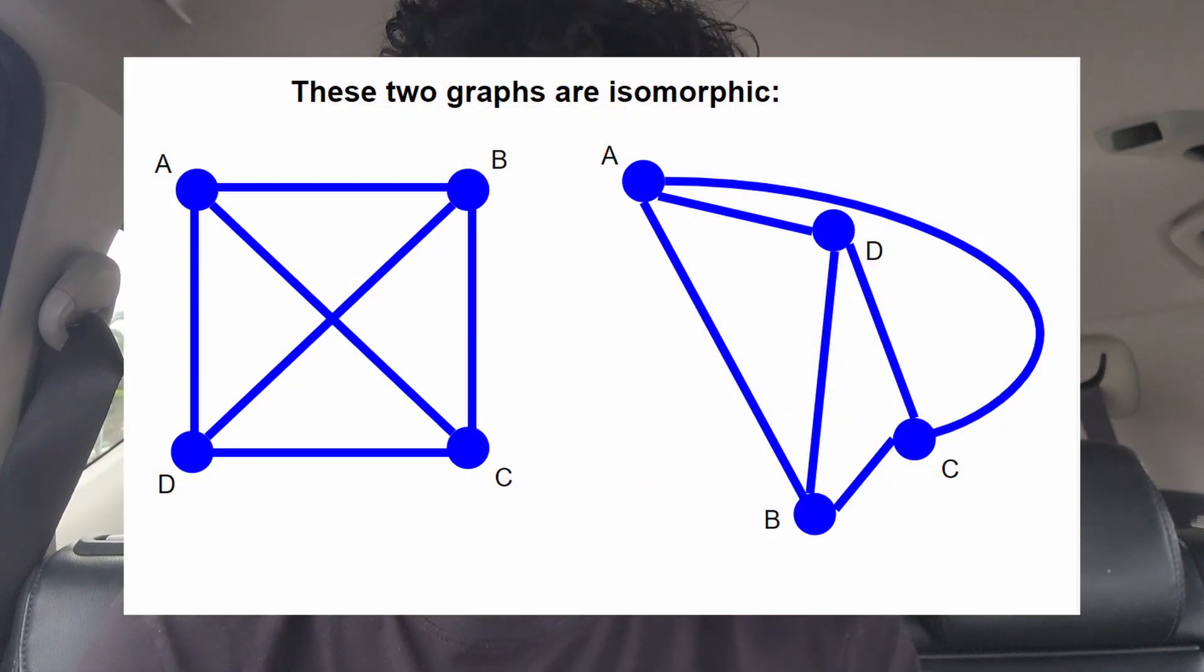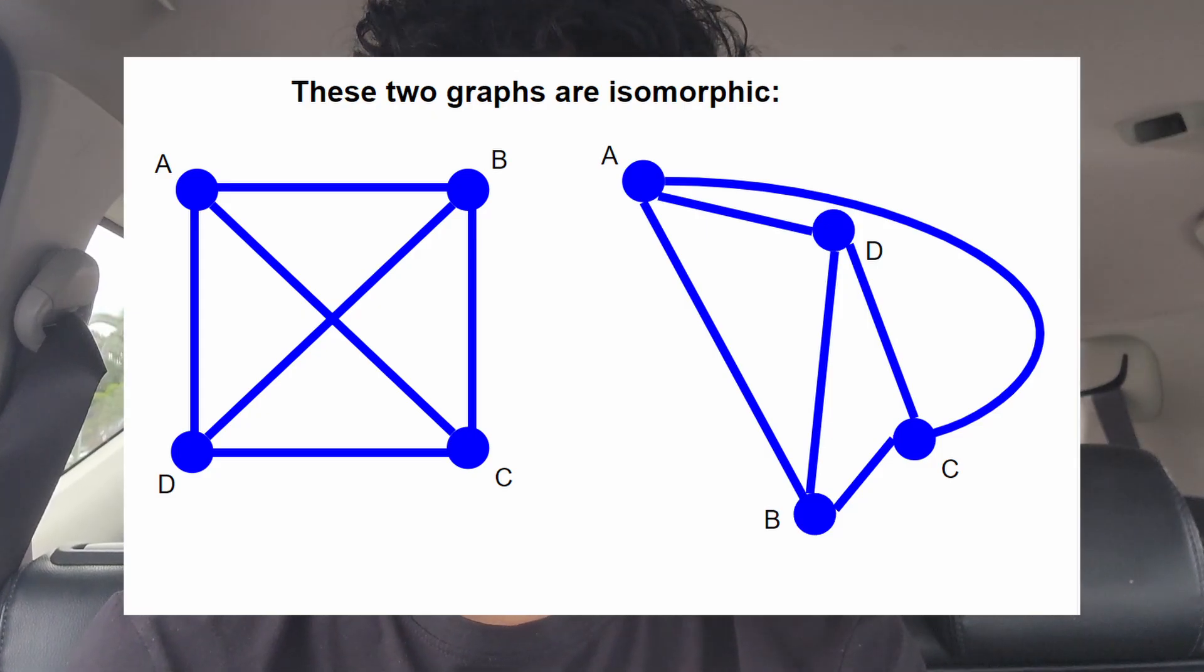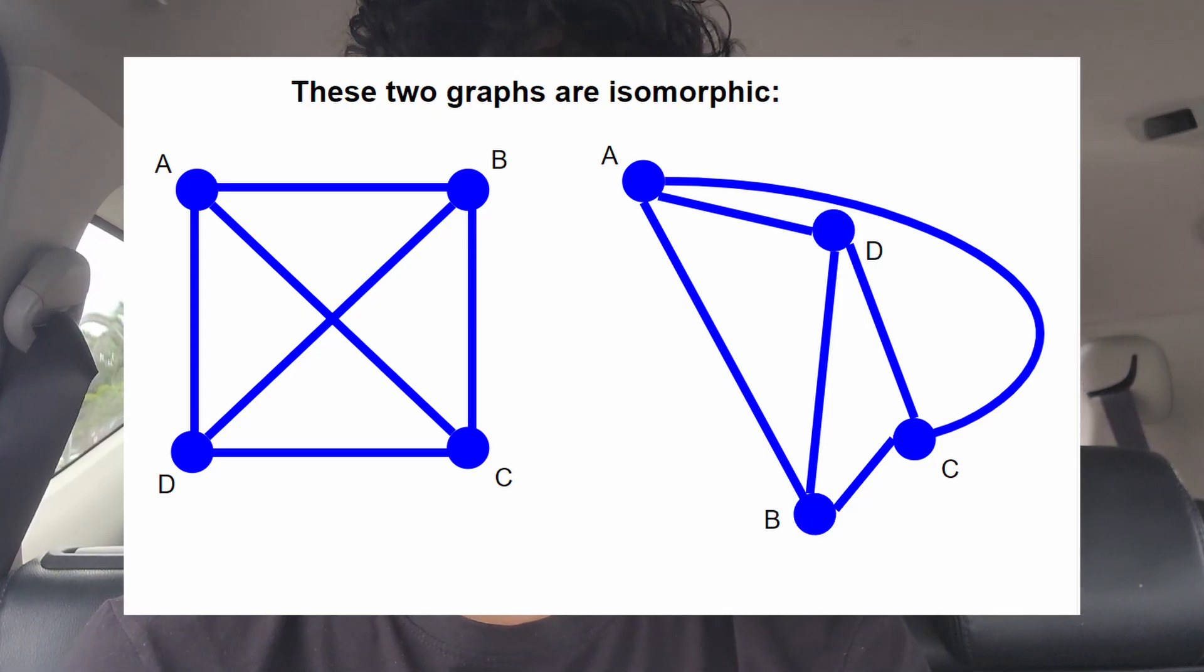On the other hand, graphs may look completely different and they have edges that cross, but if you uncross and redraw the graph, they have the same connections and the same labels showing each connection, making these graphs isomorphic.